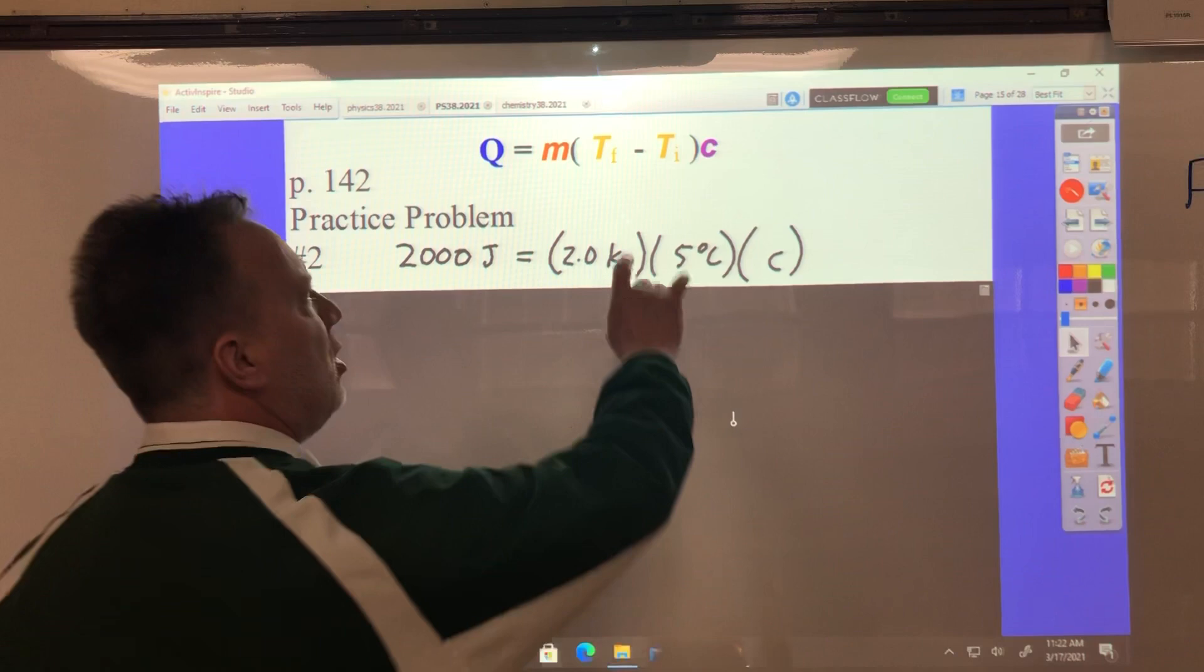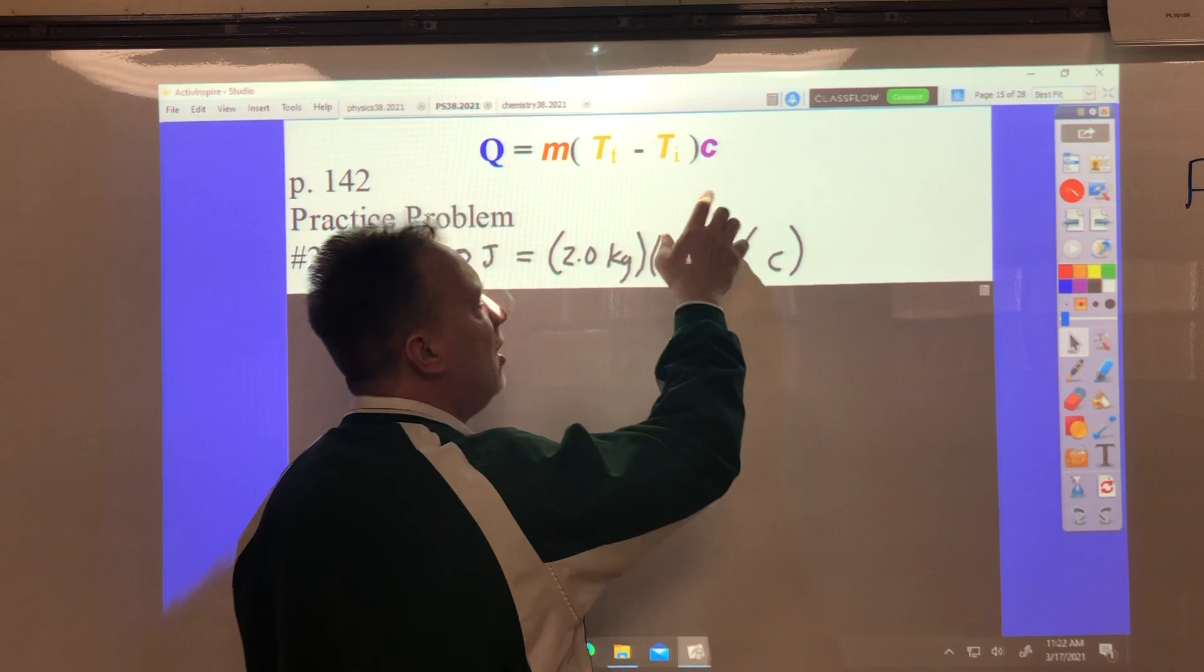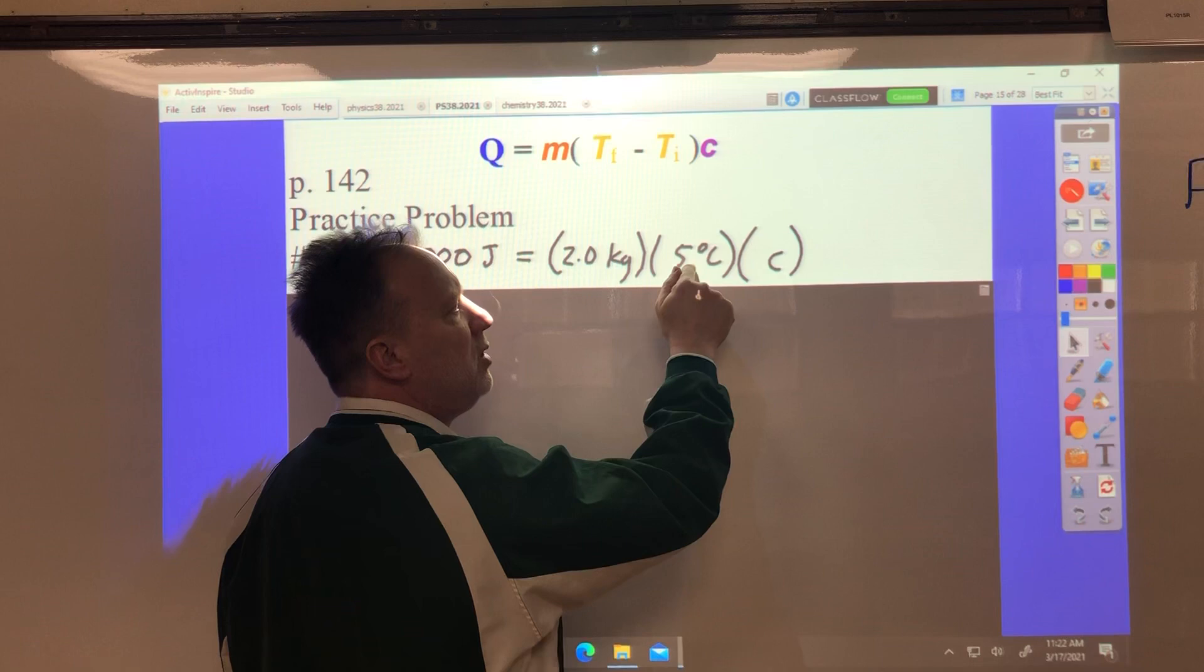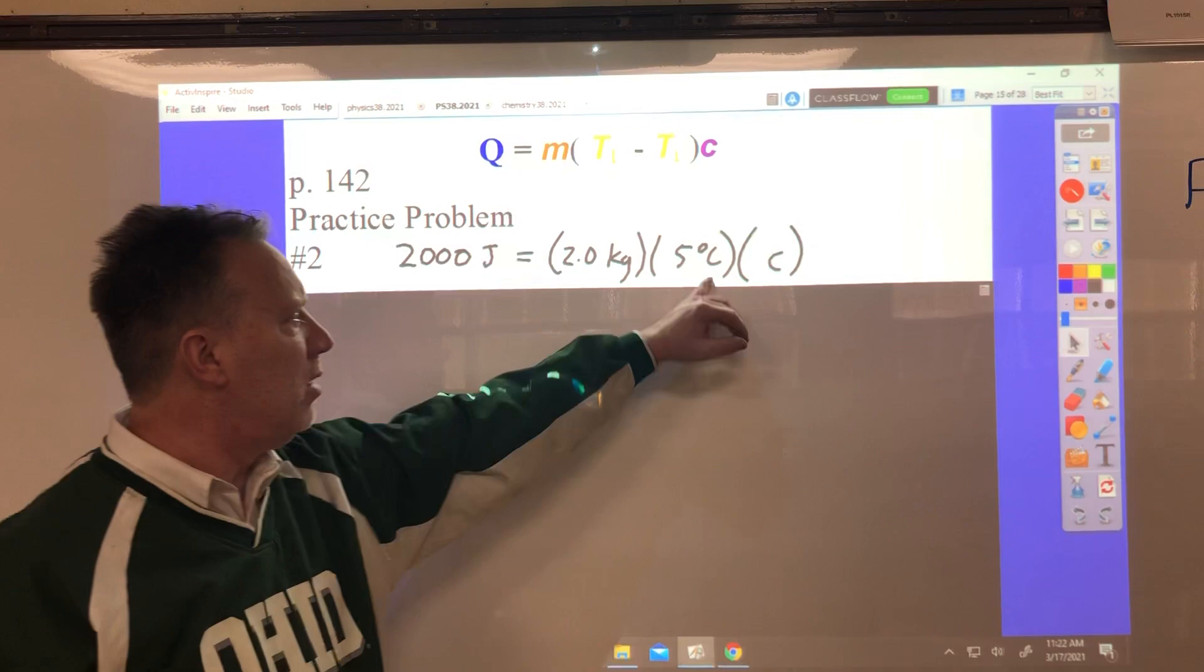So when we put in what we've got, we already have the subtraction for the temperature. It's telling us it goes up by 5. It increases by 5. So when we don't have an initial and a final, we just know it already went up by 5. So you just put the 5 there, 2 kilograms here, and 2,000 joules is the energy added, and we're looking for C.